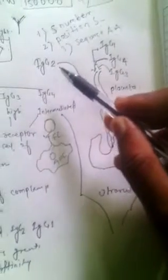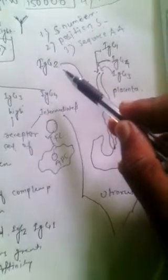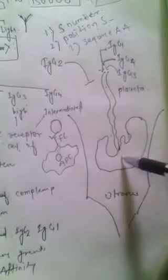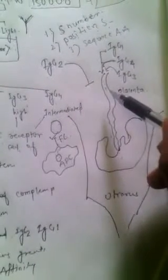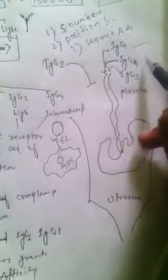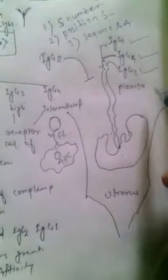IgG is the only immunoglobulin protein which can cross the placenta and enter the fetus. Among them, IgG1 is able to cross, IgG4 is able to cross placenta, IgG3 is also able to cross placenta, but IgG2 is not able to cross placenta at all.